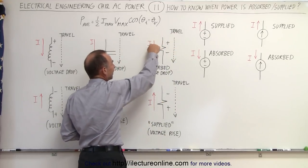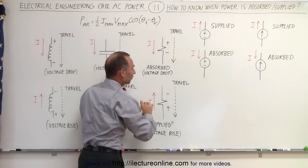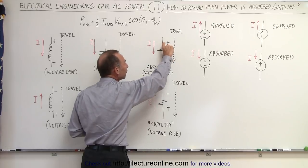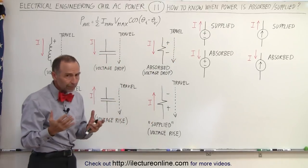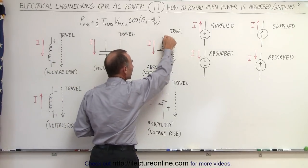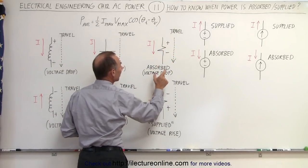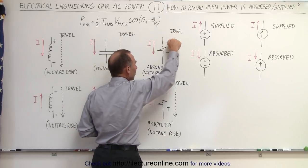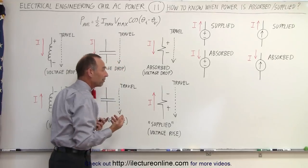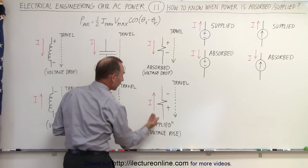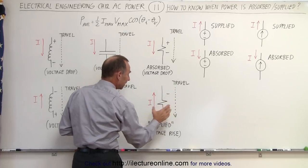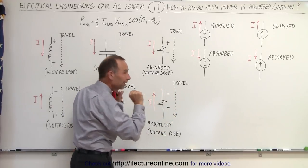Now here we have the current in the same direction as the direction of travel around the mesh, which means that we travel from the positive to the negative end of the resistor. The reason why there's a positive and negative is because we'll have a voltage drop from here to here. And that means that if there's a voltage drop in the direction of travel, then power is absorbed by that resistor. However, if the current is flowing in the opposite direction of travel, in such a way that now we have a voltage rise across the resistor, then power is being supplied by that resistor.